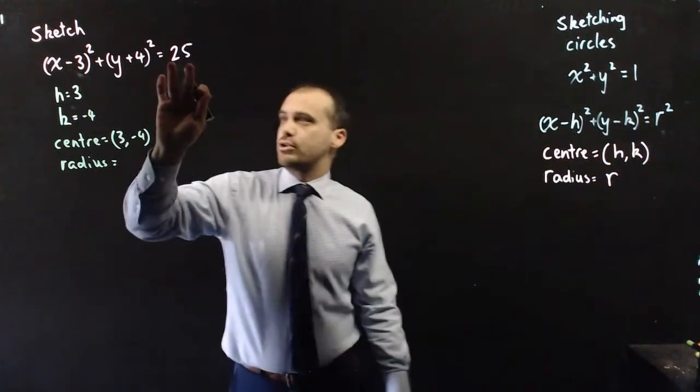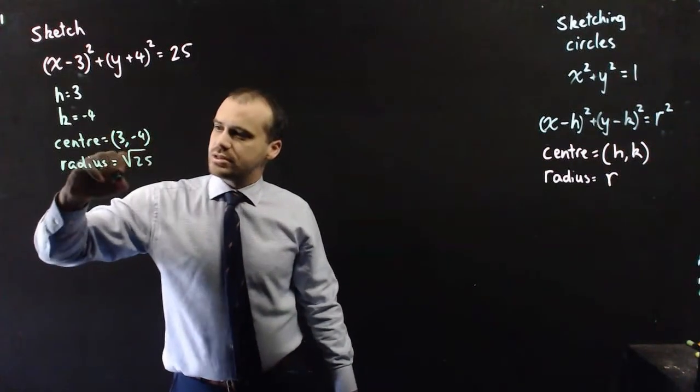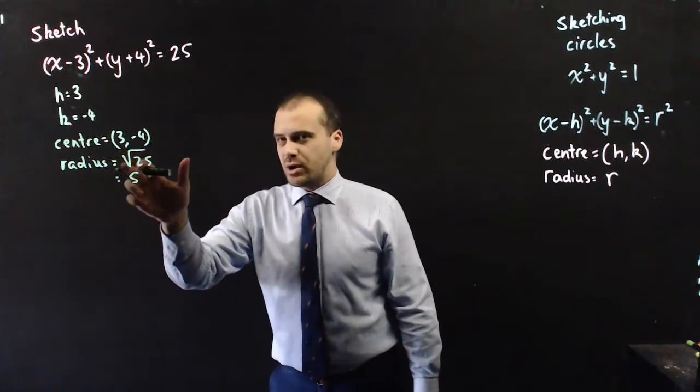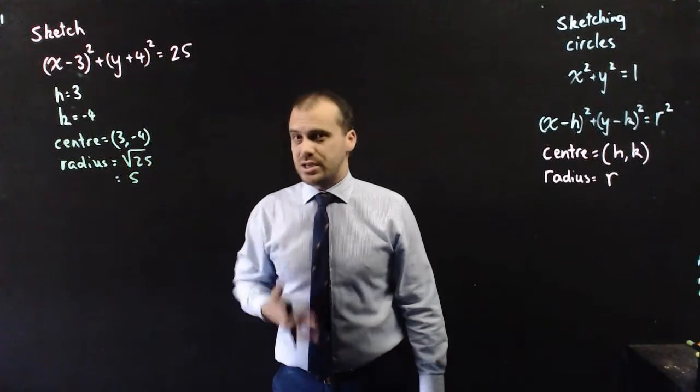So, the square root of 25 will give us our radius, which is 5. It doesn't make sense to put a plus or minus there, because we're not going to have a negative radius. Context matters.